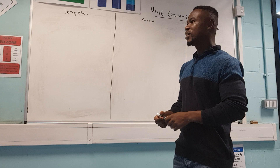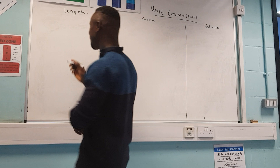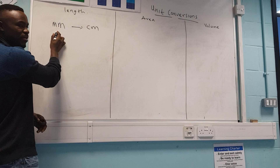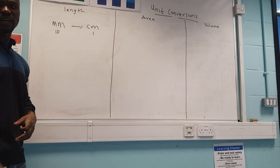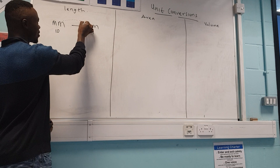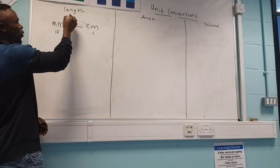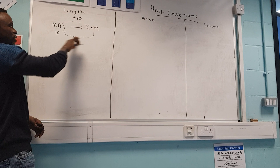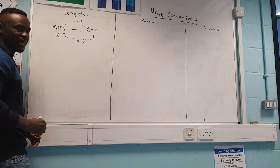First, let's start with the easy ones: changing from millimeters to centimeters. If you take your ruler, you'll find that for every ten millimeters you get one centimeter. So if you're moving from millimeters to centimeters, the number becomes smaller, so you divide by ten. Moving in the opposite direction — centimeters to millimeters — you multiply by ten.